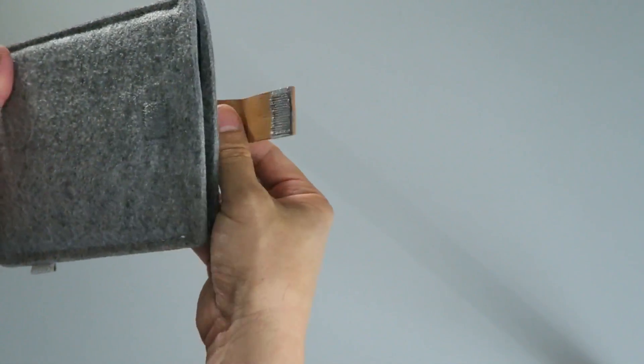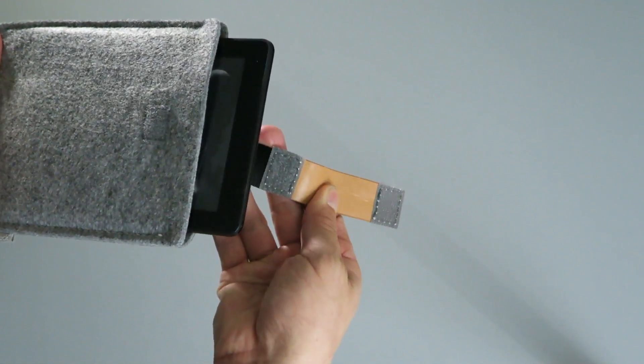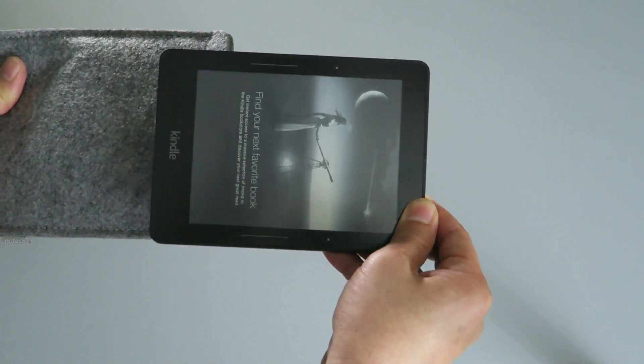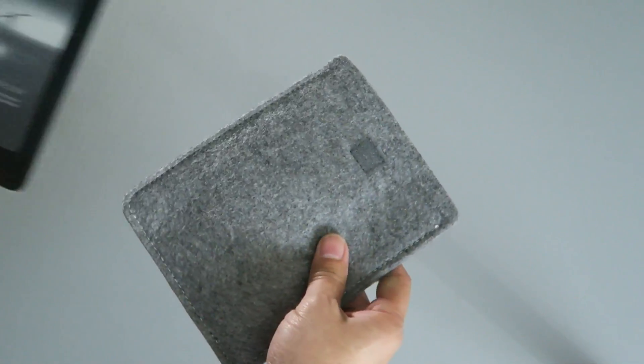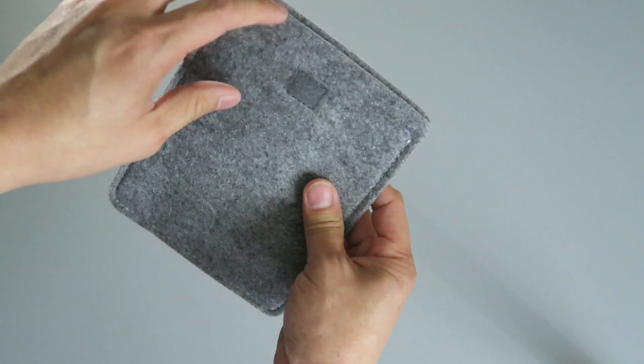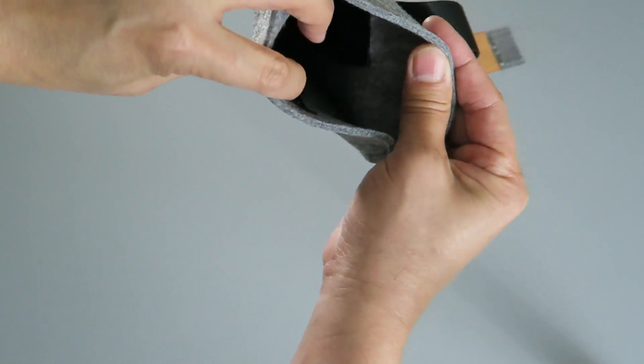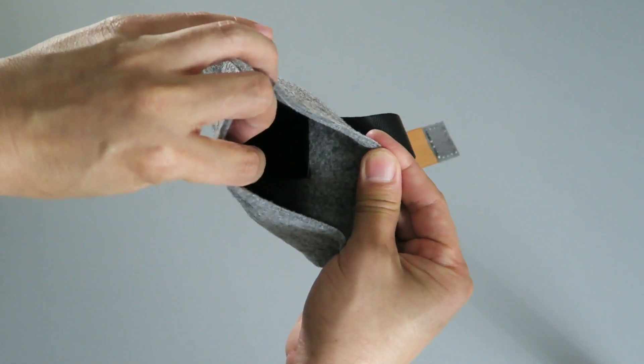And it's very unique. The way you pull this out is you just basically pull the strap, and inside there is another little loop that pushes the Kindle out of the case. So it's got a unique way of removing the Kindle when you want to remove it from the slip case. You're not fishing in there with your fingers and trying to struggle with it.